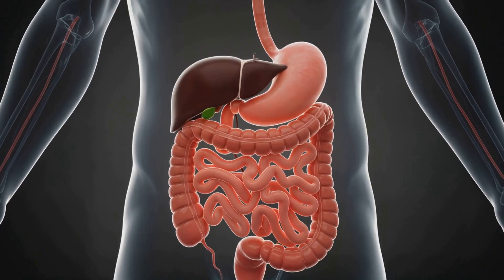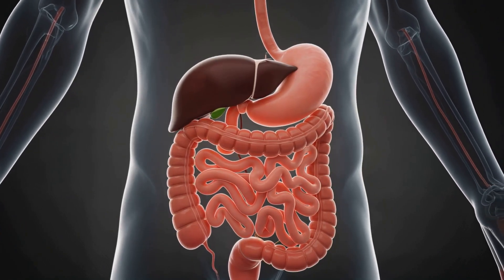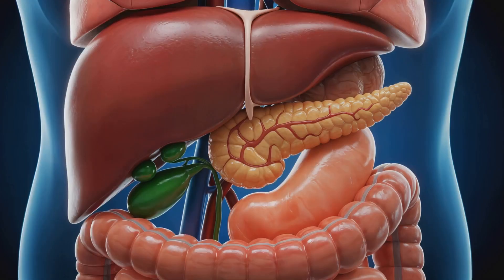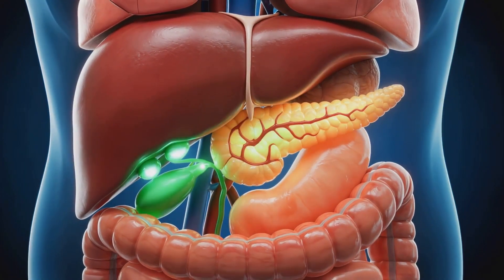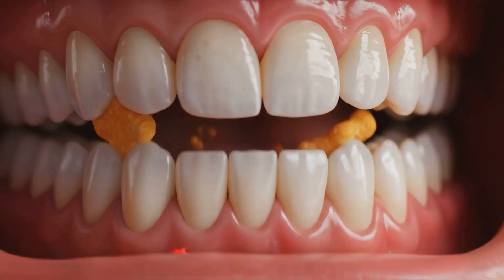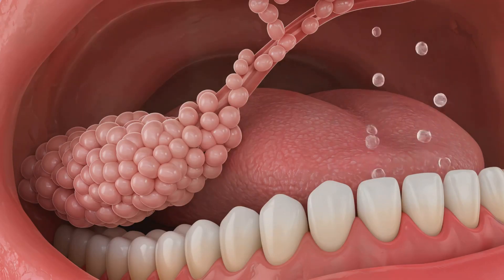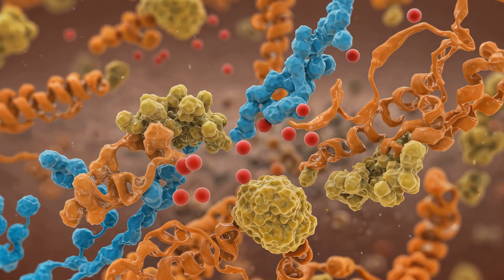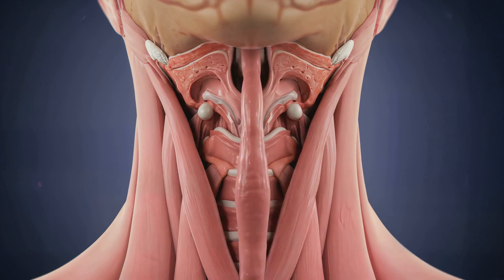The digestive system transforms ingested food into absorbable molecules for cellular use. It consists of the alimentary canal and accessory glands, integrating mechanical, chemical, hormonal, and microbial processes. Digestion begins in the mouth — mastication increases surface area while salivary amylase initiates starch hydrolysis, lingual lipase begins lipid digestion, and the bolus is voluntarily moved to the pharynx, initiating an involuntary reflex.